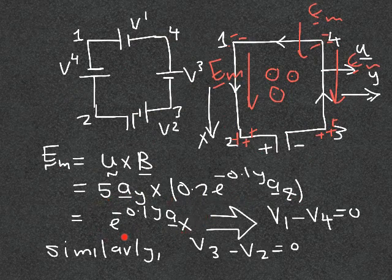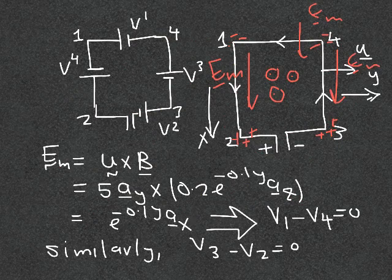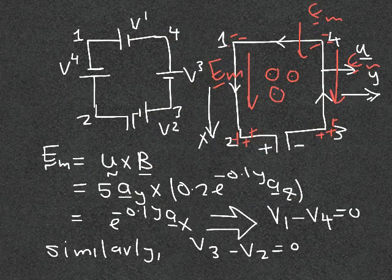We integrate E_m dot dL over wire 1-2, from x = −1 to x = 1, to get the expression for voltage V2 minus V1. Then we integrate from 0.4 to 0.3 in the same way to get V4 minus V3.